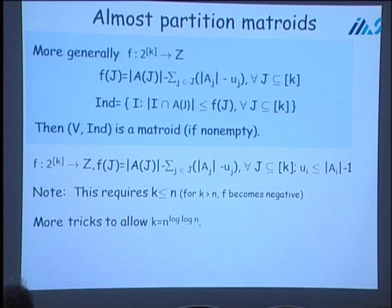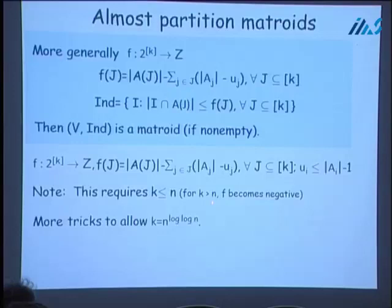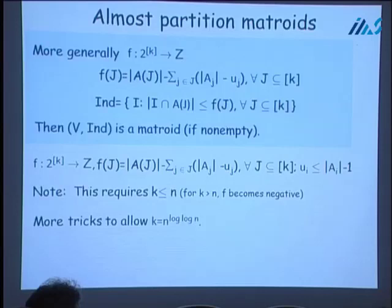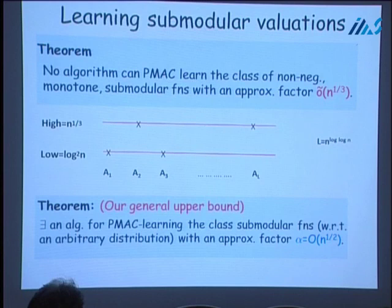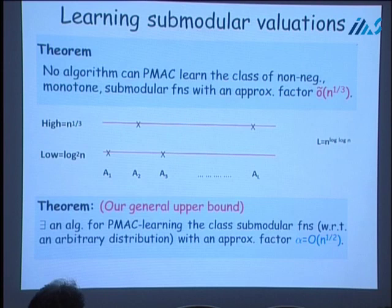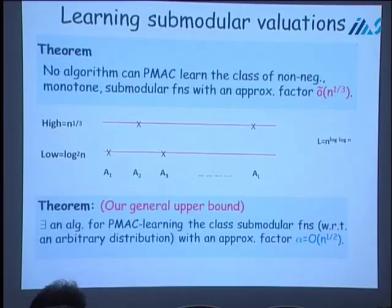However, this construction works only for K less than or equal to N. When K is greater than N, the function F becomes negative — the set simply becomes empty. So we had to do further tricks to ultimately work with super-polynomially many subsets A1, A2, ..., AL. After further work, we again arrive at the picture: there exist super-polynomially many subsets of the ground set, and there exist values high and low separated by a large multiplicative factor, such that for any assignment on these sets, there exists a matroid in our family whose rank function achieves that assignment, giving us the desired lower bound.